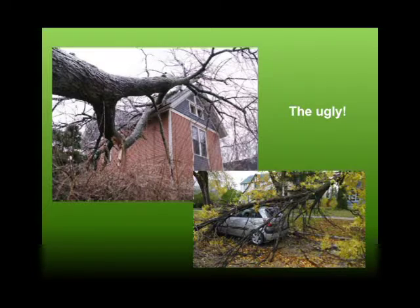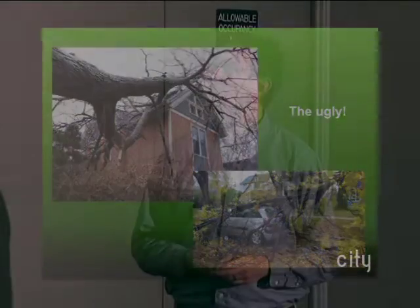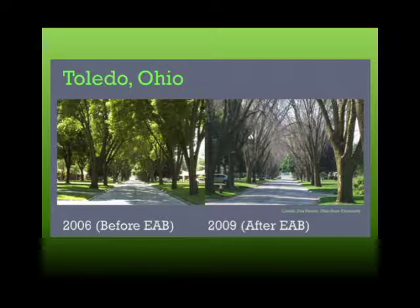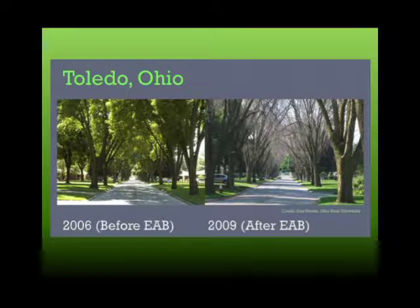Luckily, this is not what Iowa City looks like yet. The damage that emerald ash borer causes comes with risk factors — trees fall on houses, cars, and can pose a safety concern to pedestrians. Here's a before-and-after picture from Ohio of what emerald ash borer can do. In just three short years, you can see in 2006 trees had a nice full canopy, and three years later they're basically dead.